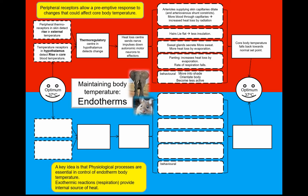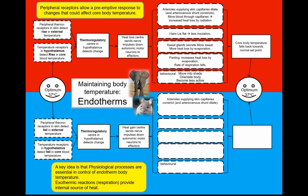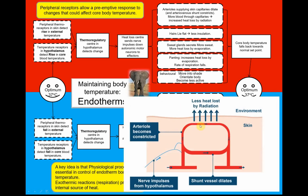What about if it gets cooler? For example, you're outside on a cool, windy day and heat is being extracted from your skin more quickly. Your peripheral thermoreceptors in the skin detect that fall, and if your core body temperature starts to fall, nerve impulses are also sent to the thermoregulatory centre. You then have the heat gain centre, which sends nerve impulses down different motor neurons to muscles and skin. Key thing: the arterioles supplying your skin capillaries now constrict, and the arteriovenous shunt dilates, so less blood goes through the capillaries and you lose less heat by radiation.